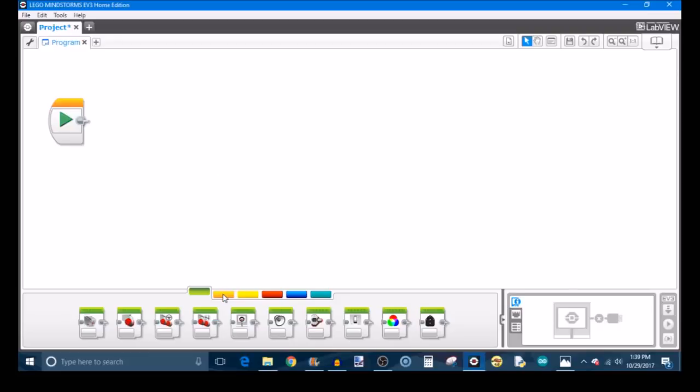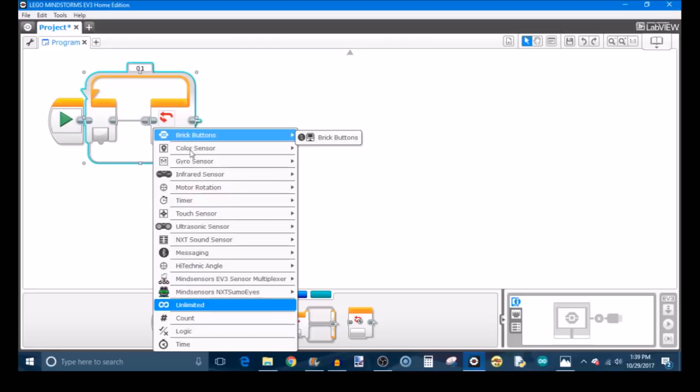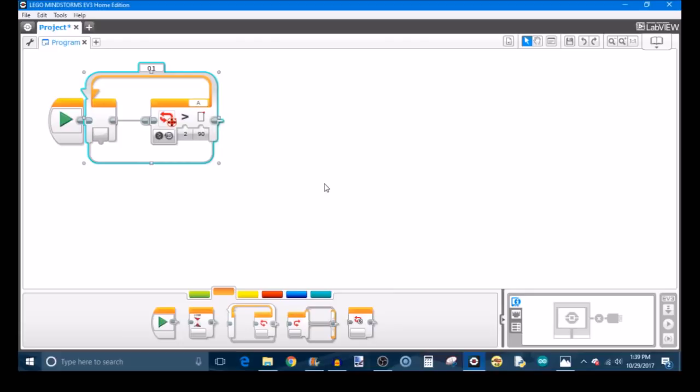Now that we have a clear direction in mind and we've determined our target values, we can build the program. The first thing you're going to do is program that first stage that I described, where the robot's just driving for that specified number of degrees. You're going to take a loop block and set the exit case to motor rotation, and of course that's going to be degrees because it's the value we measured earlier. You're going to select one of your drive motors, either B or C.